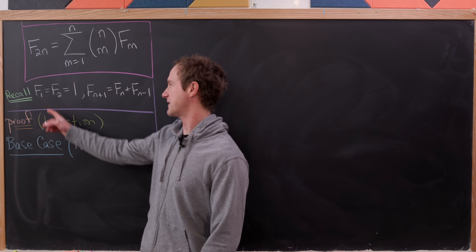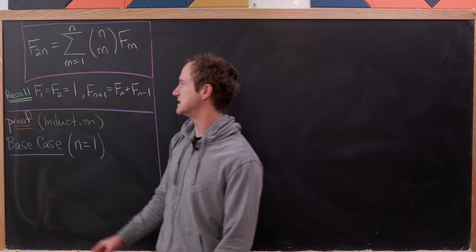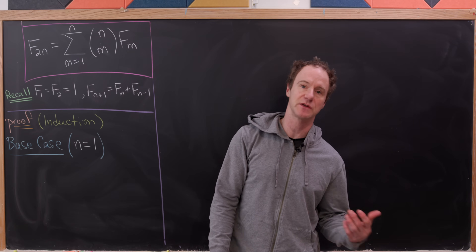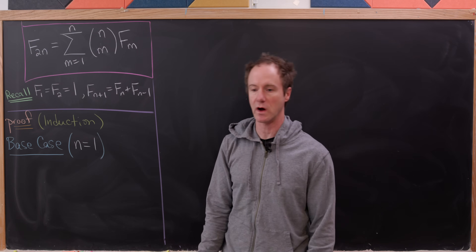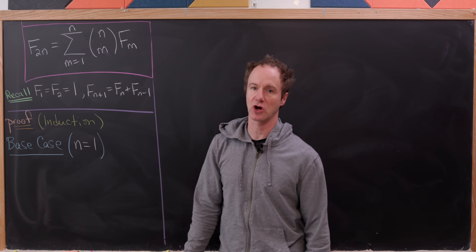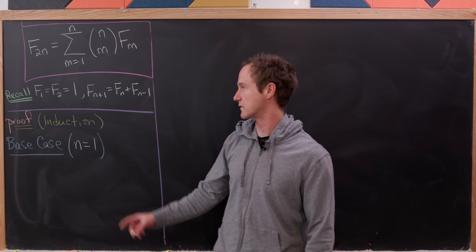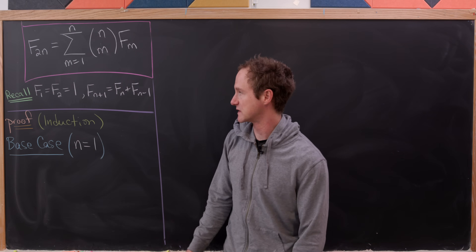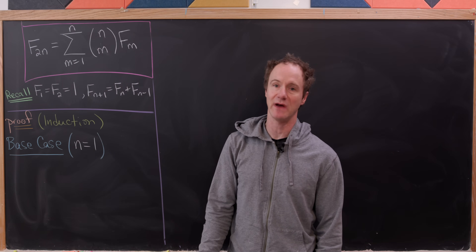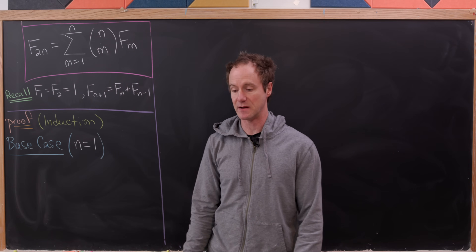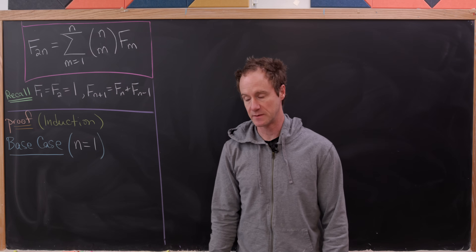Let's recall how the Fibonacci numbers are defined. We've got two seeds: f sub 1 and f sub 2, both equal to 1. After that, the two-step recursion takes over, so f sub n+1 is equal to f sub n plus f sub n-1.